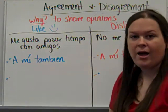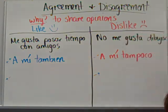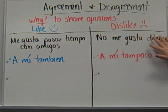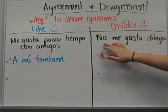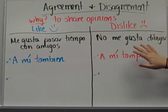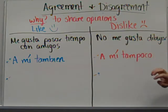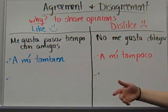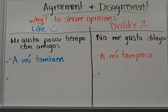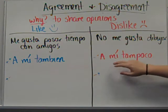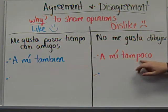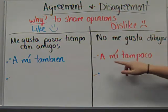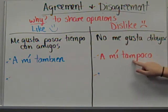Make sure you have an accent on that 'í.' Over here we have the negative side — someone doesn't like something. 'No me gusta dibujar' — I don't like to draw. And if you also dislike it, so you're also in agreement, you say 'a mí tampoco' — me neither.